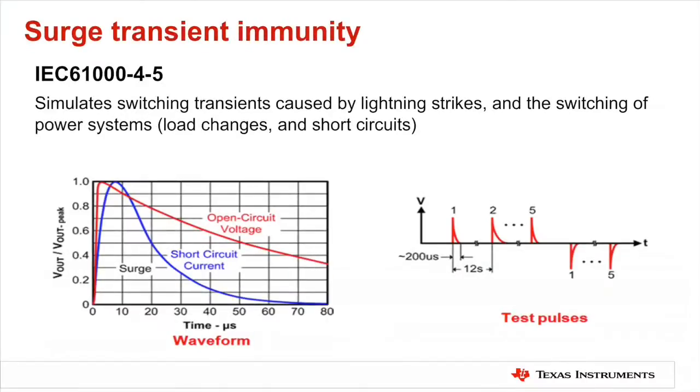While the surge immunity test, IEC 61000-4-5, is the most severe transient immunity test in terms of current and duration, its application is often limited to long signal and power lines of length greater than 30 meters, and high voltage systems that output or input greater than 60 volts. This test simulates switching transients caused by everyday lightning strikes or the switching of power systems, including load changes and short circuits. Characteristics for this test are the high current due to low generator output impedance, and the long pulse duration — approximately 1000 times longer than for ESD and burst tests — indicating a very high energy pulse.